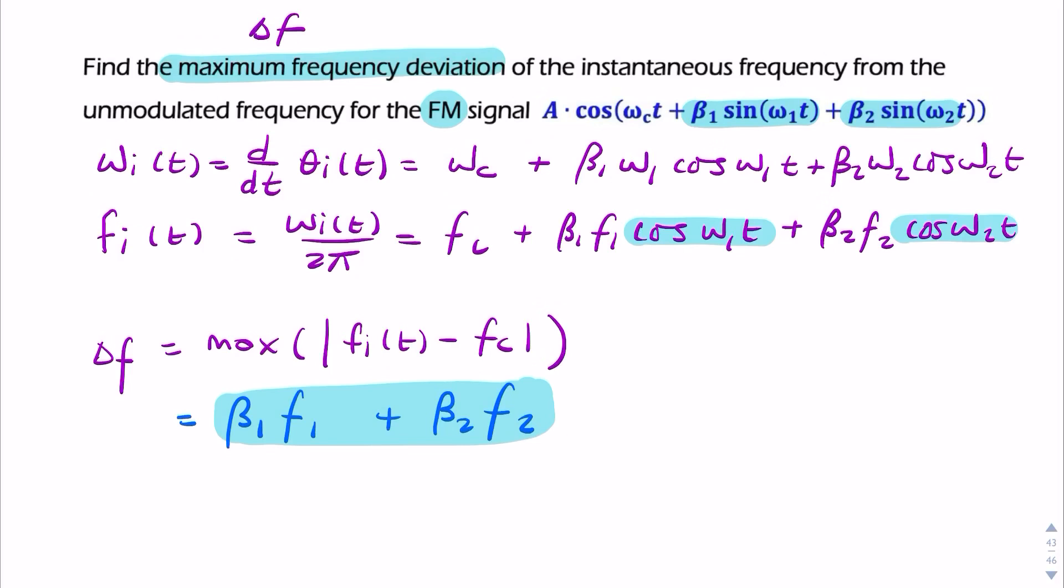So we could have written it like that or you could have said it's beta 1 omega 1 over 2 pi plus beta 2 omega 2 over 2 pi. But I think that looks much better. So that's your final answer.